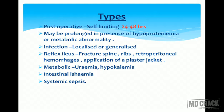Other causes of paralytic ileus include infection (localized or generalized), reflex ileus seen in fractured spine, ribs, retroperitoneal hemorrhage, application of plaster jacket, metabolic causes seen in uremia and hypokalemia, intestinal ischemia, and systemic sepsis.